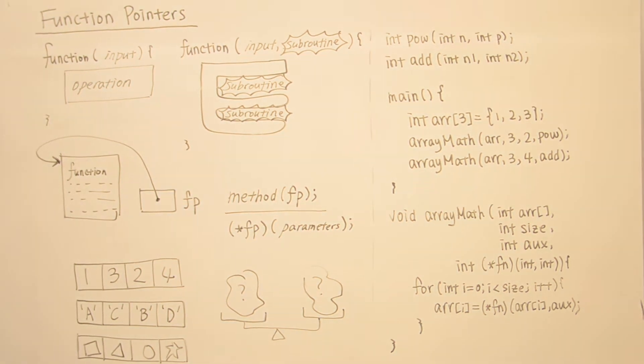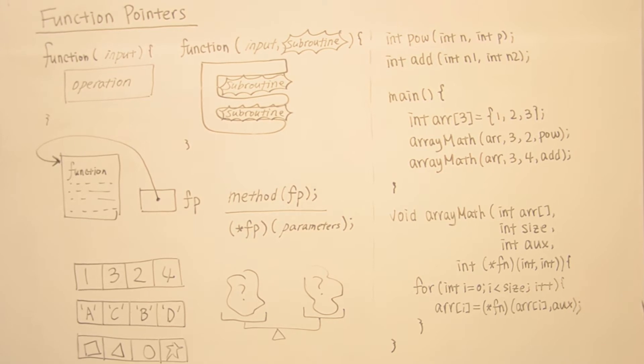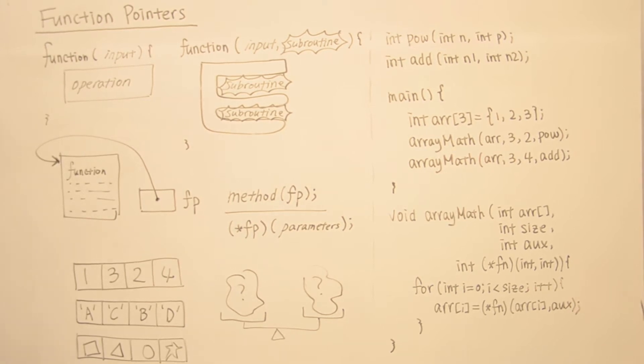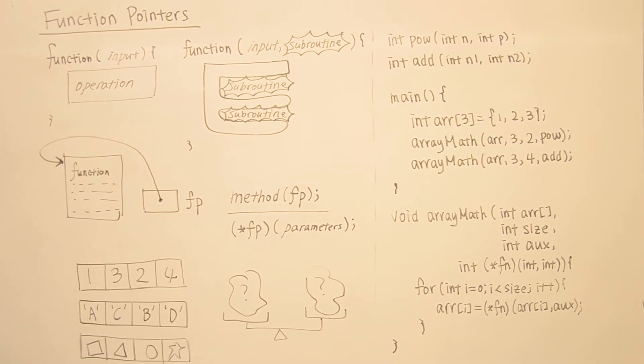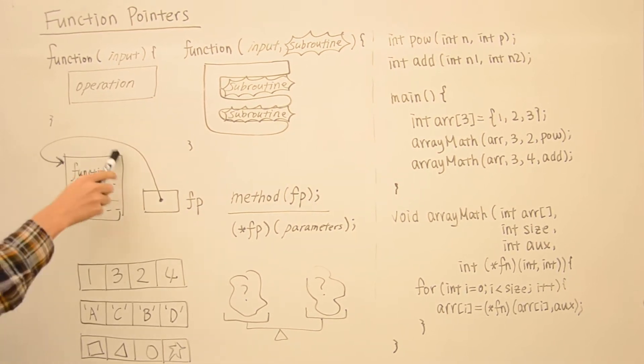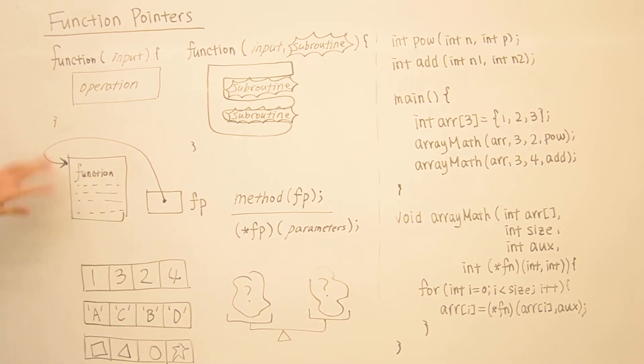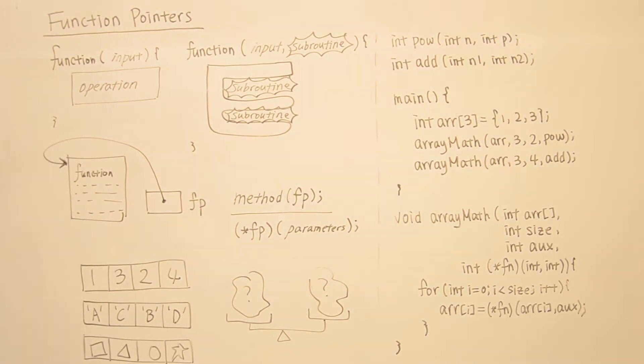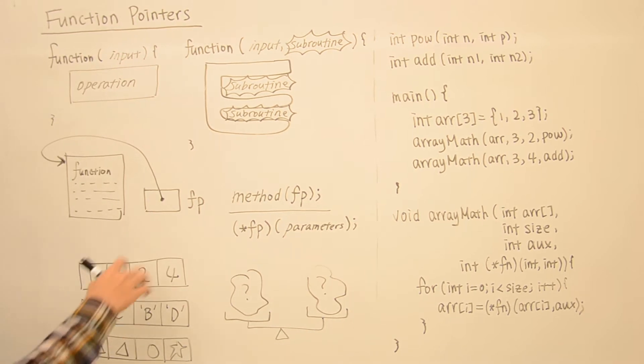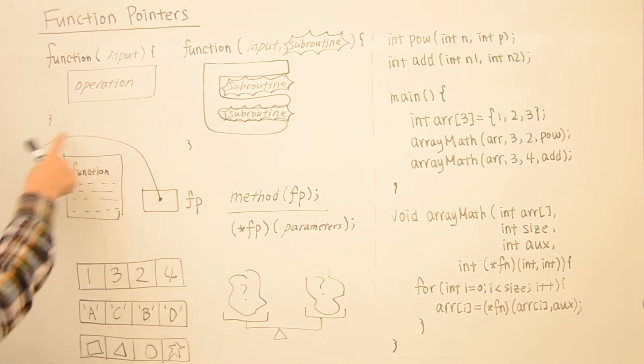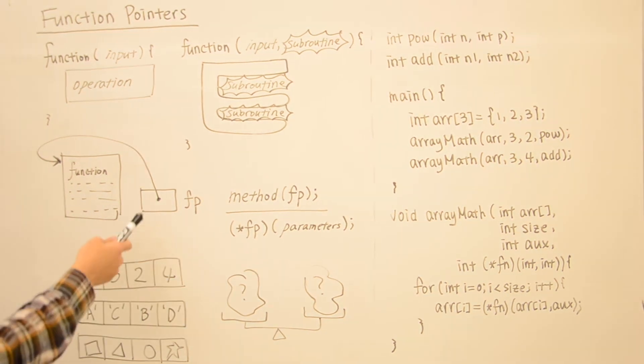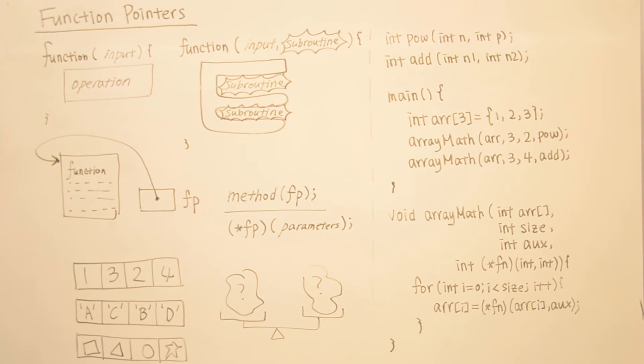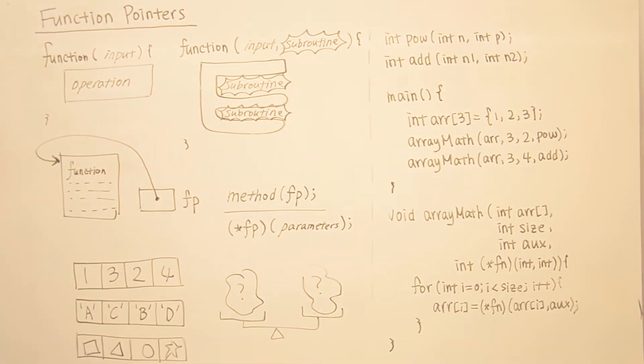So this is where function pointers comes in, and the basic idea of how it works is like this. So when we have a function in our program, it's basically living in the memory, like this. So we have a block of memory that contains all the instructions for the machine here. And what we're doing here is basically we have a variable, and that's going to be a pointer to the first line of that operation. So this is where the main function pointer comes in. So if we have this pointer, then we can just pass it around like just any other variables.